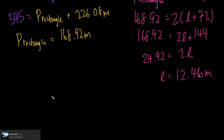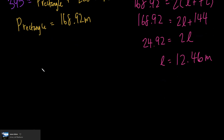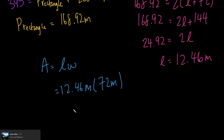Now we can solve for the area of the rectangle: area equals length times width, so 12.46 meters × 72 meters = 897.12 meters squared. Now we have the area of the rectangular part.